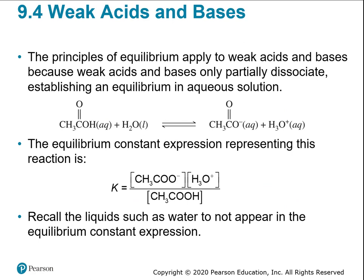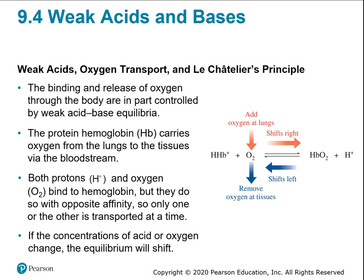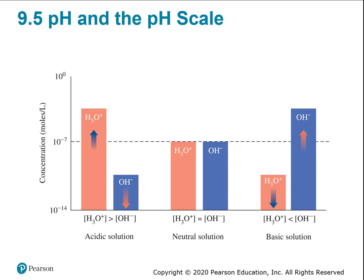There are homework questions on equilibrium. We'll leave this until Wednesday. On Wednesday we'll talk about weak acids and bases — how they react — and then move on to pH. Strong acids and bases make salt and water. Weak acids and bases don't make a lot of ions, so they don't react as strongly as strong acids and bases.